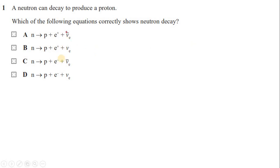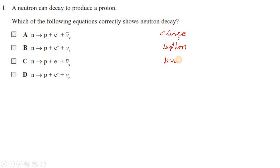To check the validity of any nuclear equation, there are conservation laws to keep in mind. The most common ones are: charge conservation — charge before and after — then lepton number conservation, and baryon number conservation. These are the conservation laws we need to apply here.